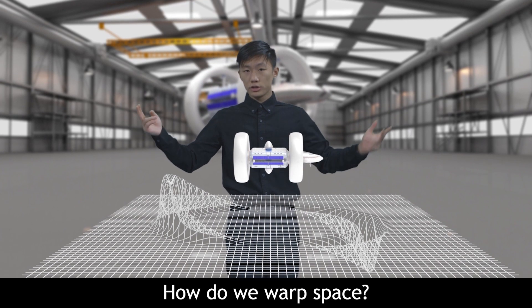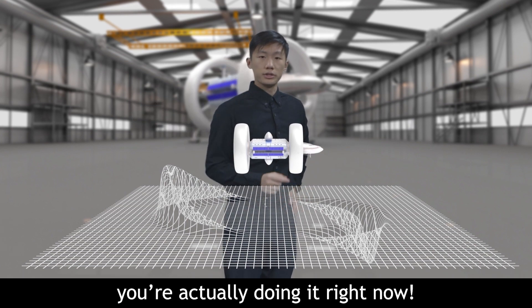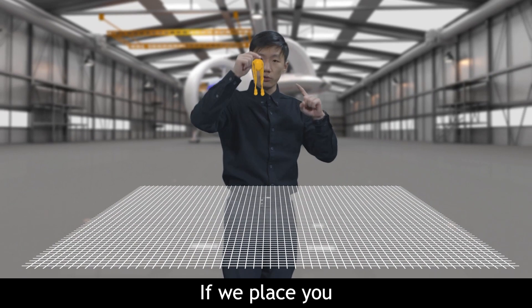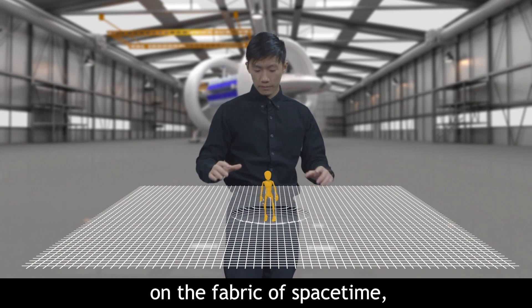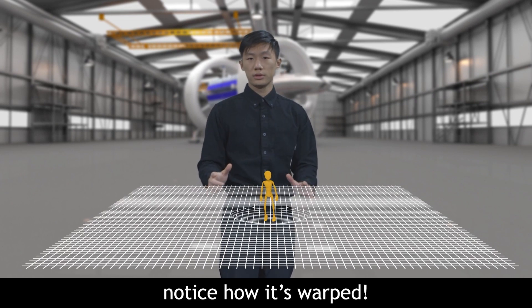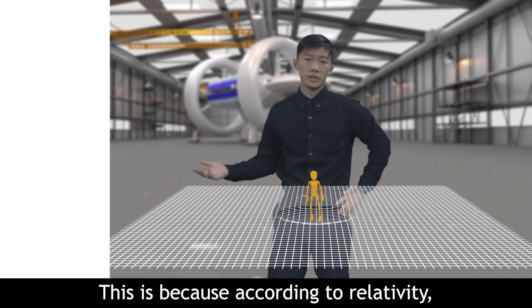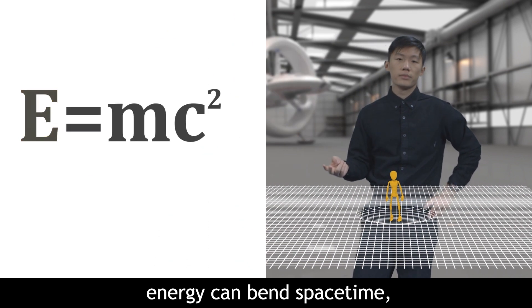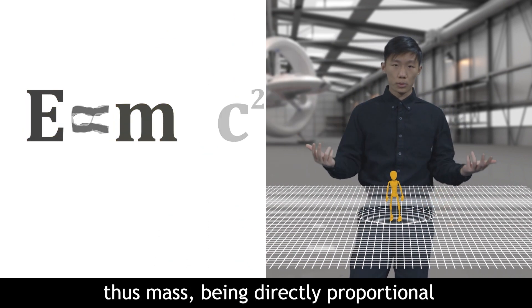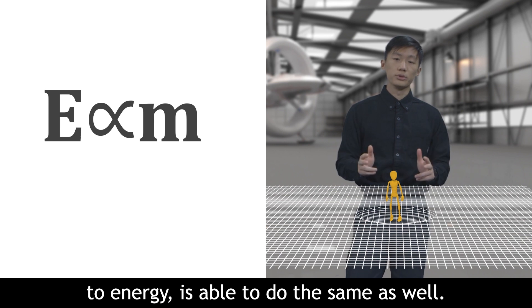How do you warp space, you might ask? Well, that's a strange question. You're actually doing it right now. If we place you on the fabric of spacetime, notice how it's warped. This is because, according to relativity, energy can bend spacetime. Thus, mass, being directly proportional to energy, is able to do the same thing as well.